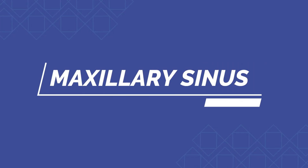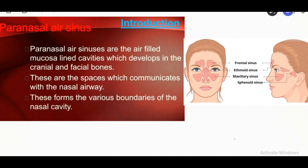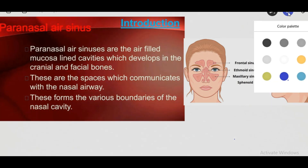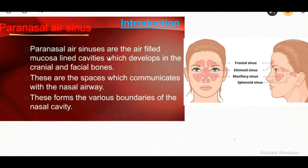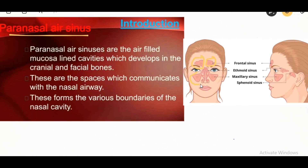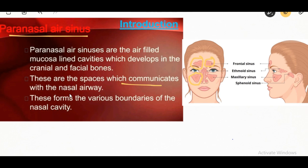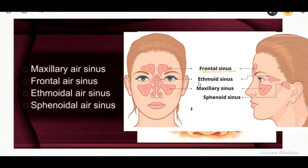Our next topic is Paranasal Air Sinuses. They are the air-filled, mucosa-lined cavities that develop in the cranial and facial bones. These are the spaces that communicate with the nasal airway. The sinuses are named for the bones in which they are located. The paranasal sinuses are: maxillary air sinus, frontal air sinus, ethmoidal air sinus, and sphenoidal air sinus.